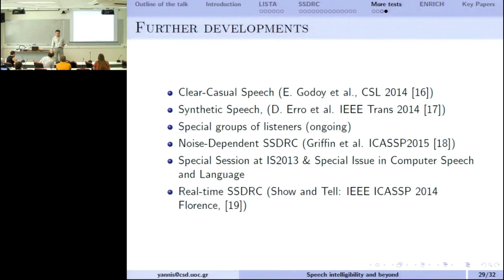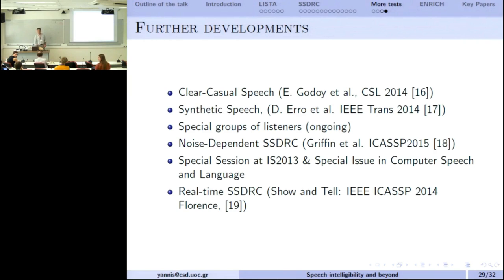A question on noise-dependent SSDRC: Is it a combination of SSN and CS conditions? SSDRC normally just modifies speech without listening, but adding an ear lets it detect the noise type — whether it is speech-shaped noise or a competing speaker — and modify accordingly. Another question: why test on people with dyslexia? Dyslexia is typically associated with reading difficulties. The connection is that listening tests with and without dyslexia show that people with dyslexia have less intelligibility — they lose intelligibility compared to people without dyslexia.